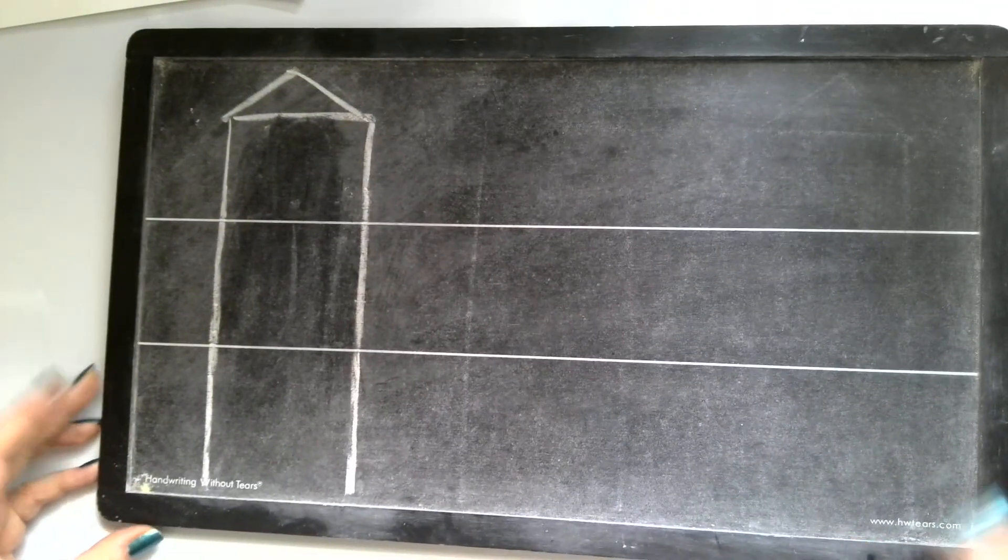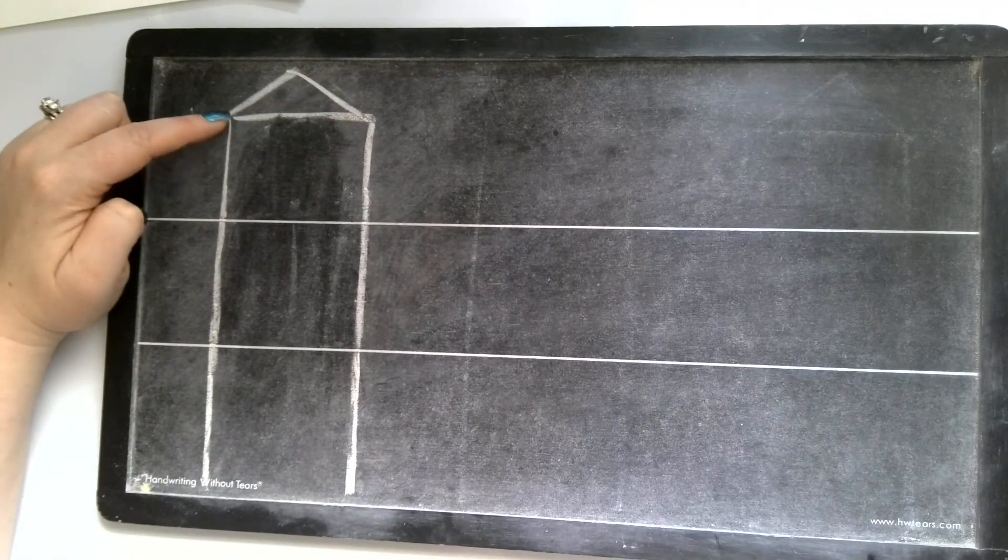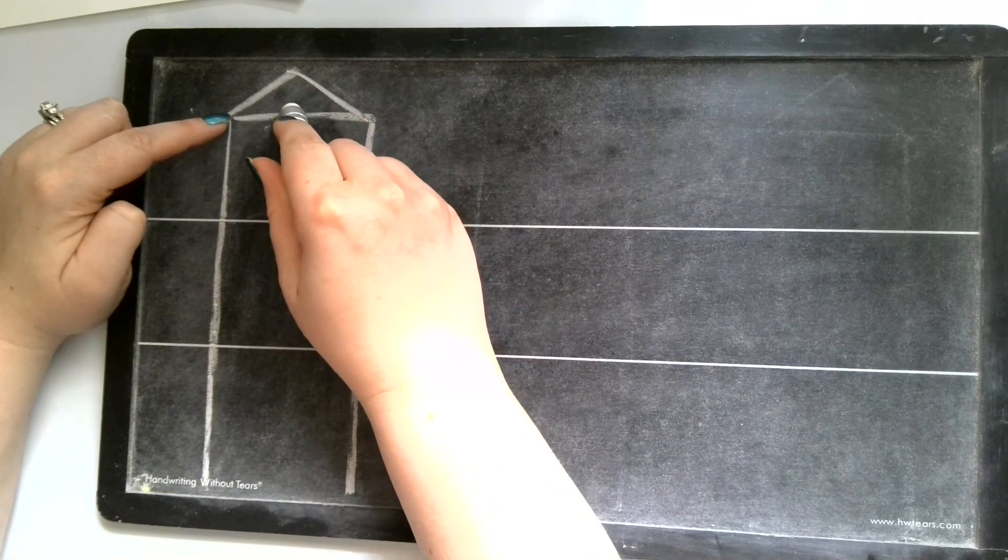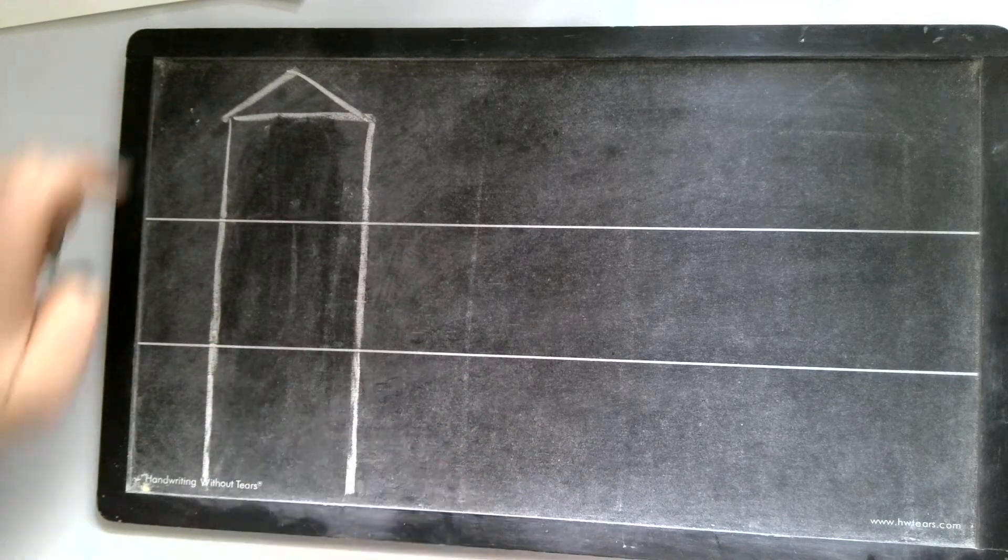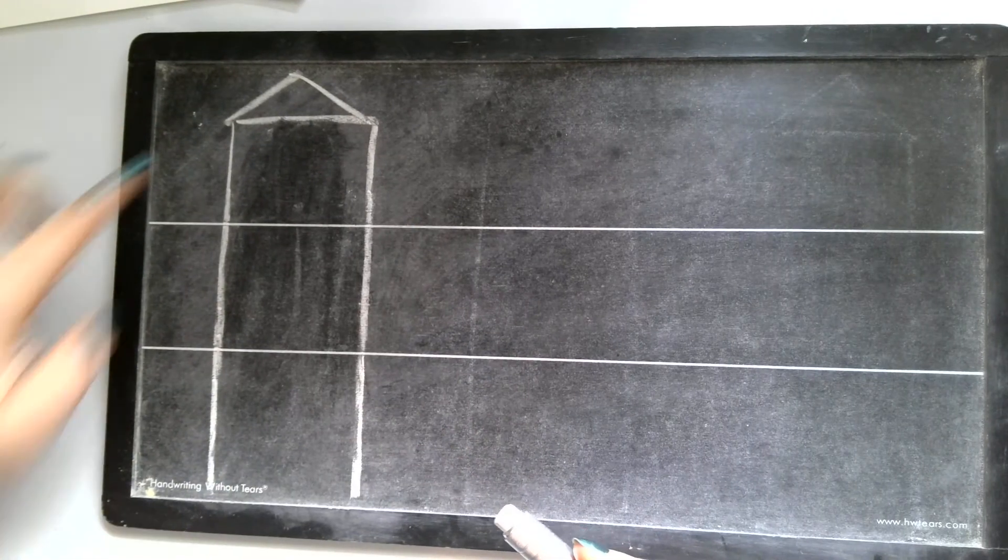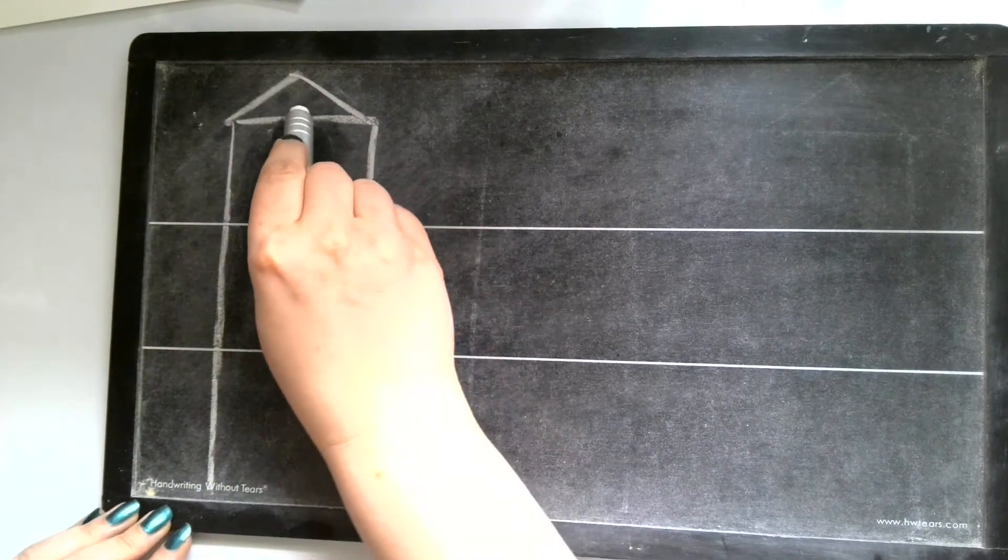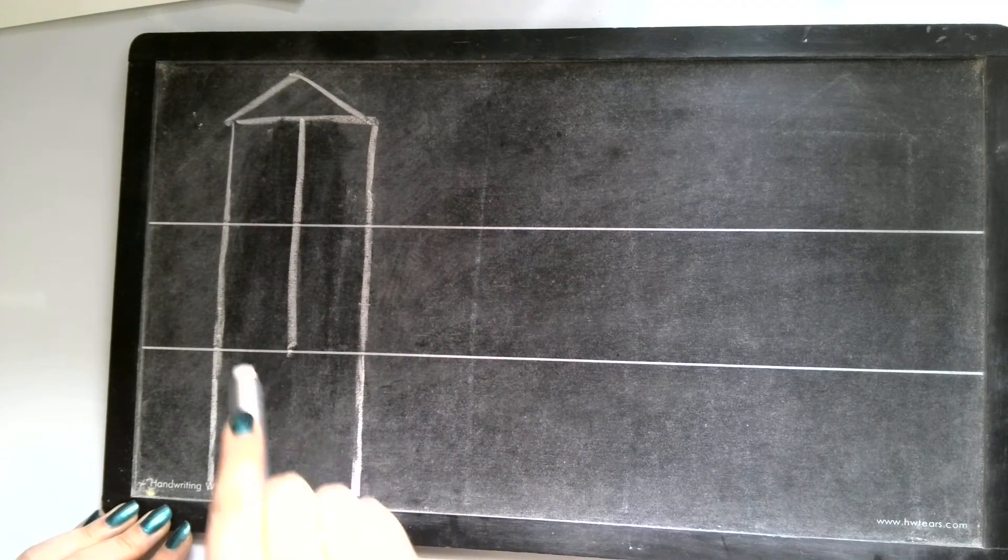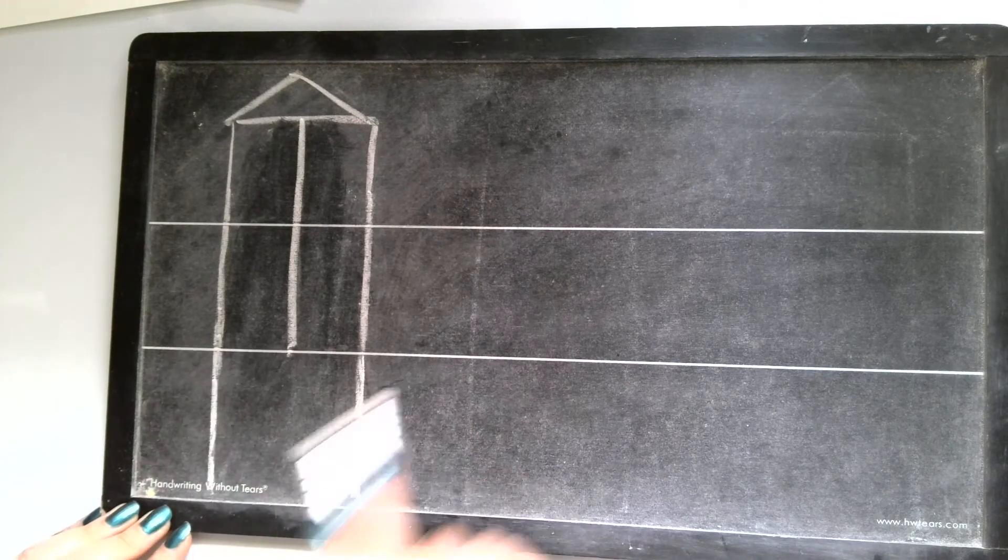To start our lowercase letter t, we're going to start all the way in the top of our handwriting house. I'm going to take my chalk and I'm going to start right in the middle. If we start on the side, that's going to put our letter a little bit off, so let's start in the middle. We start in the middle and we draw a straight line down to the bottom of the house. We're not going into the basement, we're only going to the bottom or the ground floor of the house.